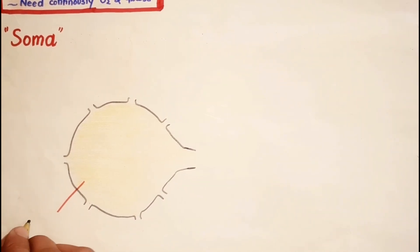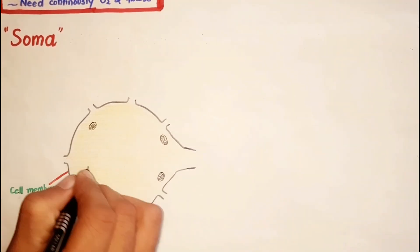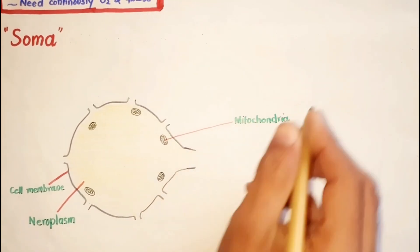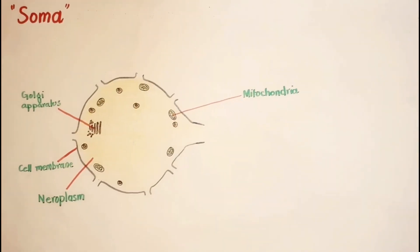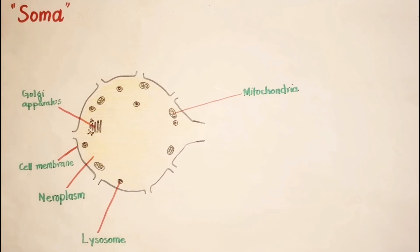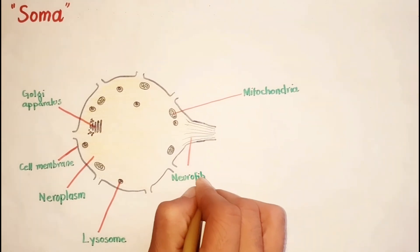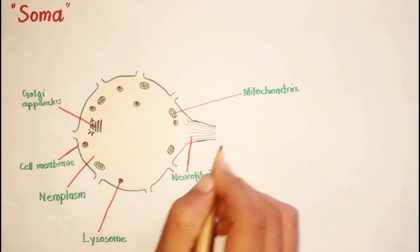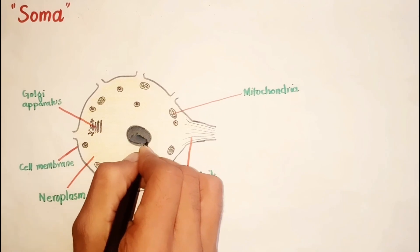Cell body or soma consists of granular cytoplasm called neuroplasm, a cell membrane, and organelles such as mitochondria present also in axon, a Golgi apparatus, lysosomes, a network of fine trees called neurofibrils which extends into the axon, and a nucleus which is centrally placed in the nerve cell body.